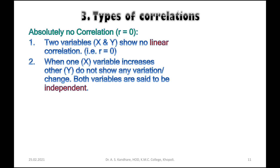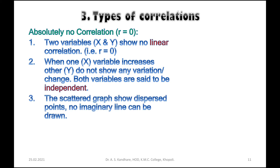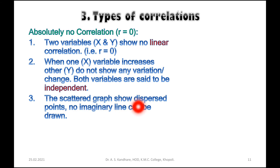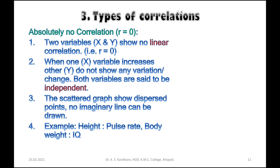The scatter graph shows dispersed points and no imaginary straight line can be drawn. In this scatter graph, all the points are dispersed randomly, so it is impossible to draw a straight line. An example is height versus pulse rate — height as one variable does not relate to pulse rate as another variable.